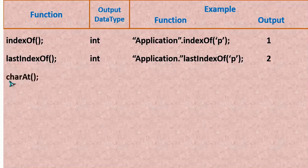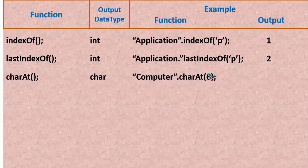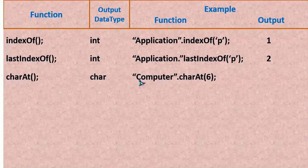Next we have charAt(). We will give the index number and the output is going to be of character type. For example, "computer".charAt(6) — the index given inside the bracket will fetch the character at index 6. Counting 0, 1, 2, 3, 4, 5, 6 — E is going to be the output.